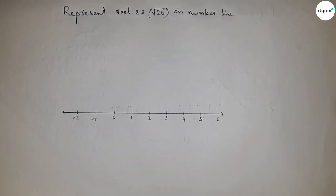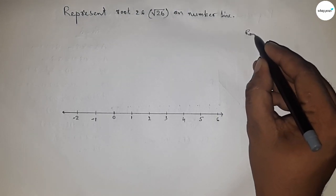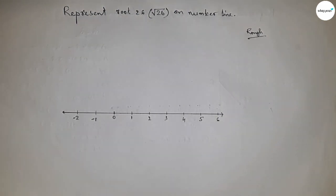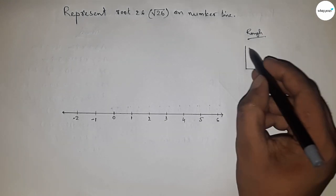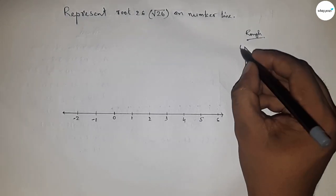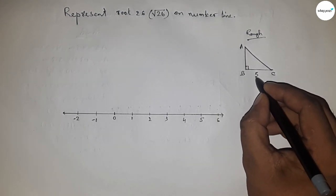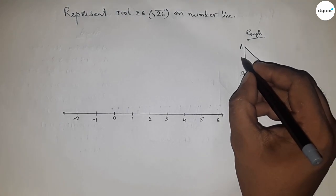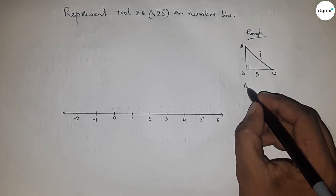Now let's discuss how to get root 26. If there is a right angle triangle ABC with base 5 units and height 1 unit, then what is the hypotenuse? By Pythagorean theorem, we can apply it here.